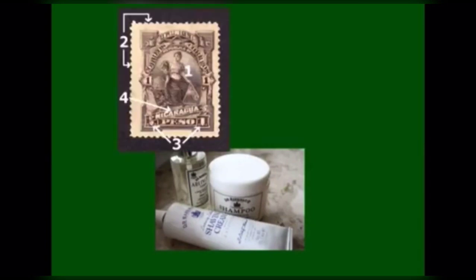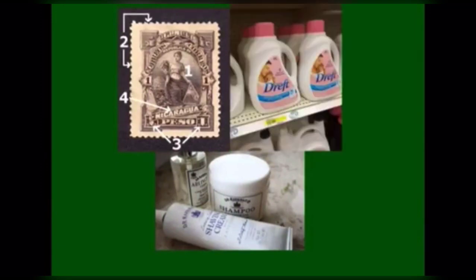Adhesives are used on stamps to stick the stamp onto the envelope. Fabric softeners coat the fabric with a thin layer of chemical, making the fabric softer, making it resistant to wrinkling and pilling, and easier to iron.